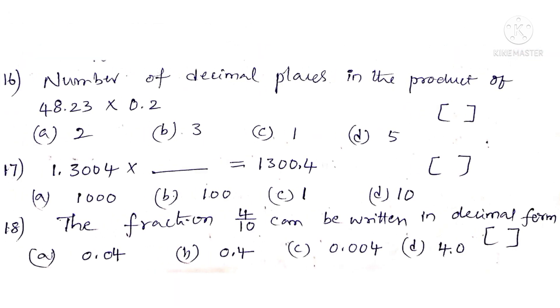Now number 16. Number of decimal places in the product of 48.23 into 0.2. Observe that the number of decimal places in the first decimal number is 2 and in the second number is 1. So total 3. So the correct choice is B.